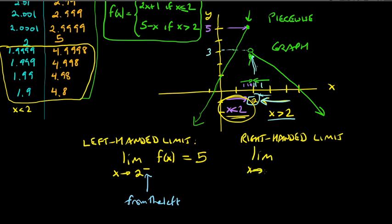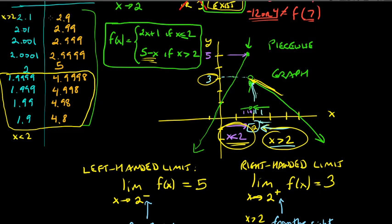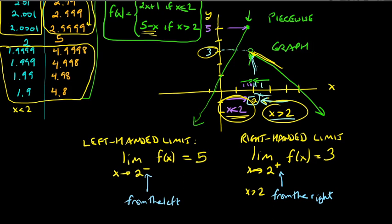Likewise, you can define the right-handed limit, with a plus sign: x approaches 2 from the positive side, meaning x is bigger than 2. We're taking the limit of the same function f(x) — specifically the piece 5 − x — and the y-values are approaching 3, as you can see from the graph and the table.